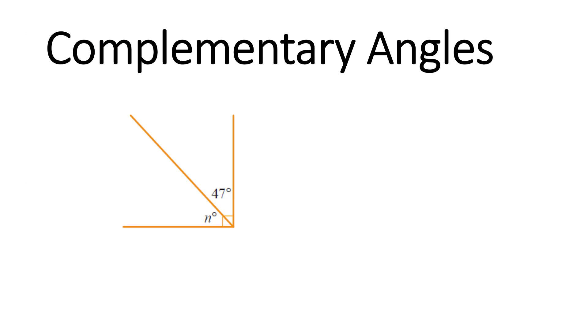So let's look at an example involving a complementary angle. We know that complementary angles add up to 90 degrees. We know that one part of this angle is 47 degrees, and the other part is unknown, so we need to try and work out what that is.